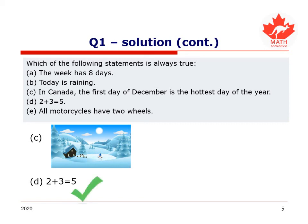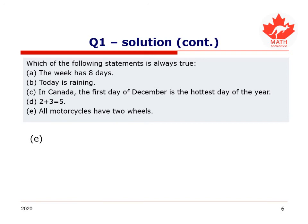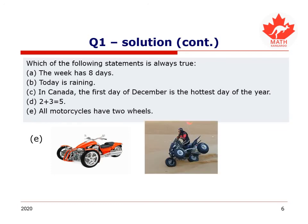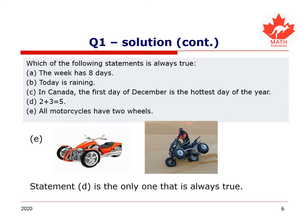We are expecting that statement E is false. Statement E says all motorcycles have two wheels. While most motorcycles have had two wheels, that is not necessarily true, so it is not always true either. Thus, statement E isn't always true. Statement D is the only statement which is always true, so D is the correct answer. Give yourself a little giggle if you got that right.